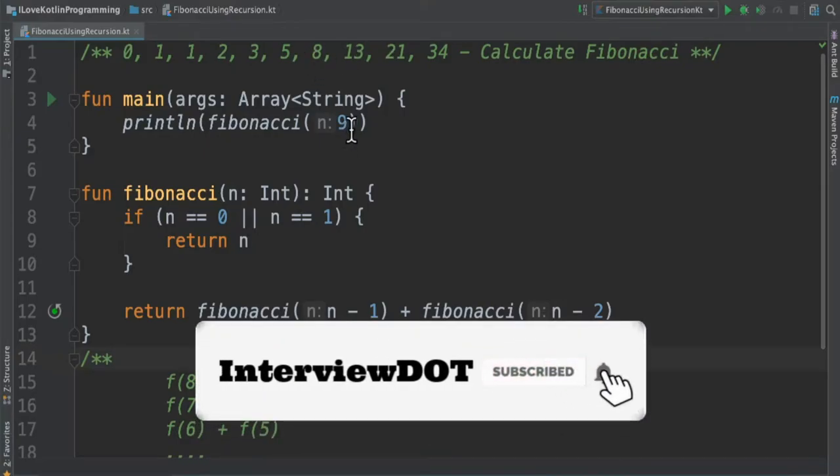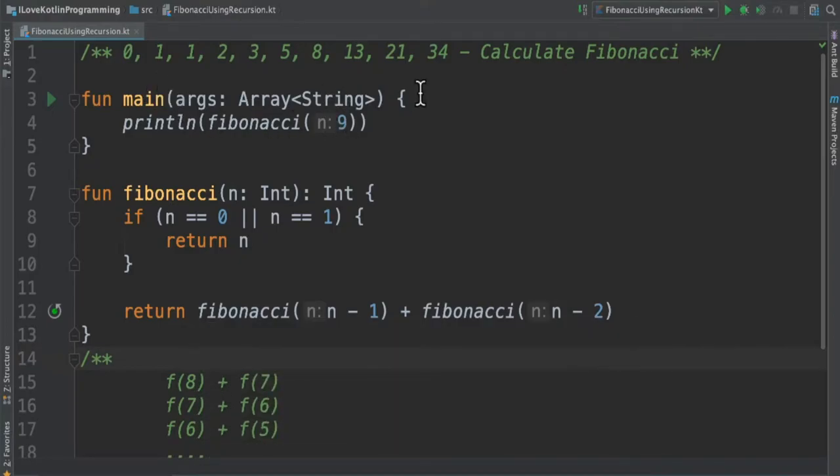In this example, if I give 9 as an input, the ninth element in this Fibonacci series will be generated as a result. So in this case it will be 34.